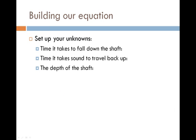Now that we understand a little bit more about our problem, we can actually start setting up our unknowns. One of our unknowns is the time it takes for this screwdriver to fall all the way down the shaft. I'm going to call that T1. Another unknown is the time it takes for the sound to travel all the way back up. I'm going to call that one T2. And the last unknown deals with the actual depth of the shaft. Just for simplicity, I'll just call this D.